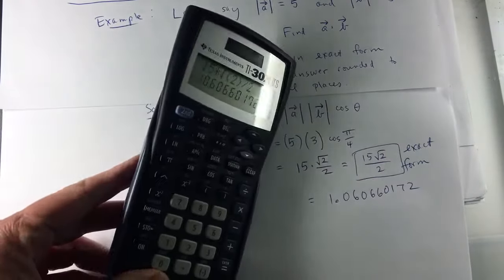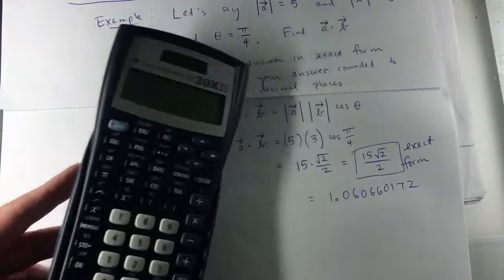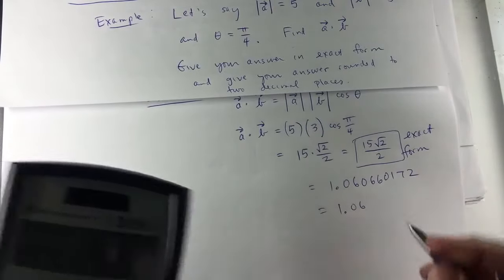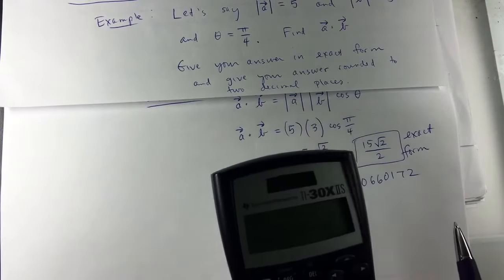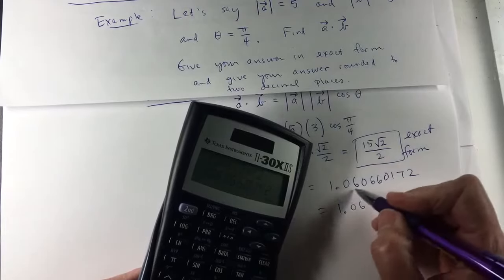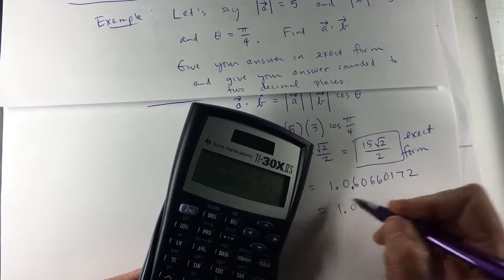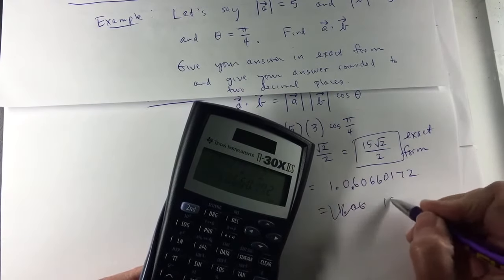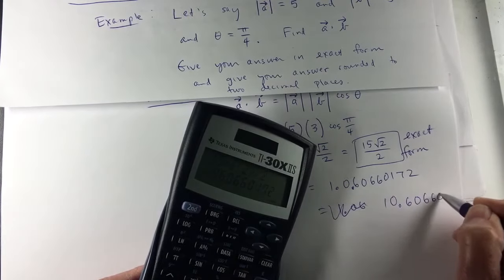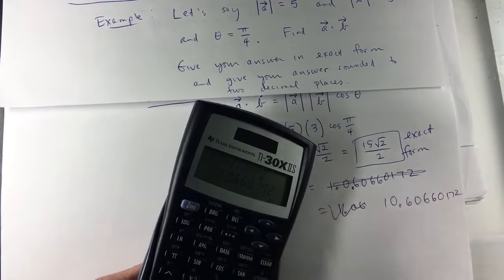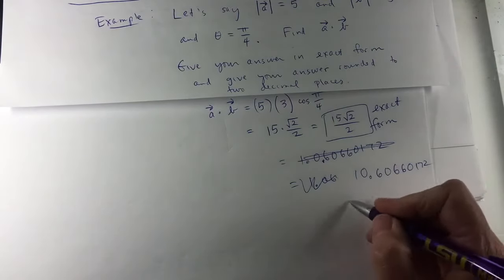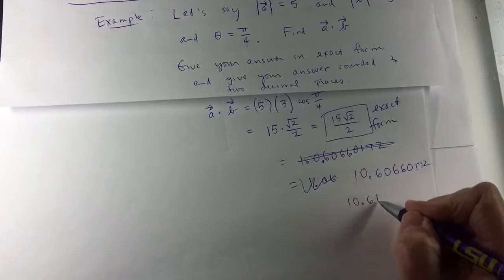What is that to two decimal places? Ten. Oh gosh, it is ten. Thank you. So the decimal's right there. Ten point six zero six six zero one seven two. So what is that to two decimal places? Ten point six one.